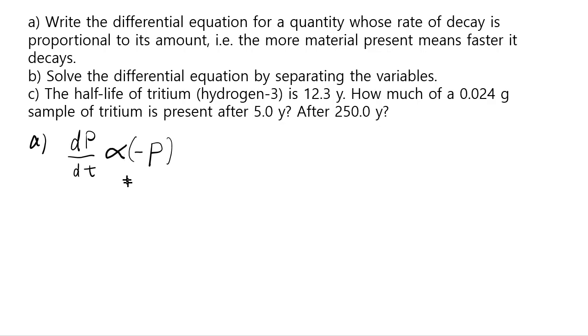But whenever you have a proportionality statement, you can rewrite this as an equation by using a proportionality constant, we're going to call that k, or just dp over dt equals to negative kp, where k is proportionality constant.